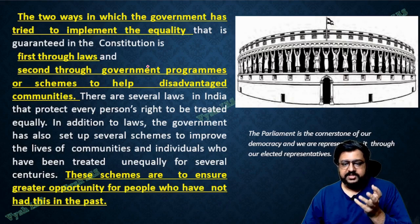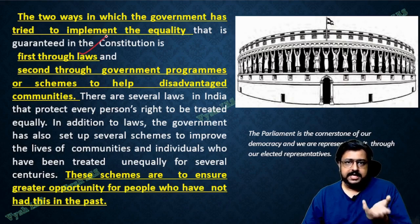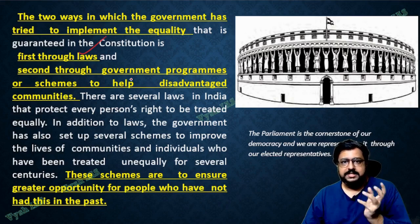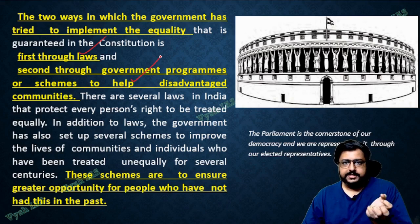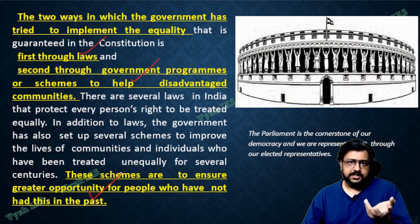The two ways in which government has tried to implement equality: one is through law — passing acts like disabled act and others in parliament. Then, government schemes. These schemes ensure people get good opportunities which they did not get in the past. Even now we are giving ration to pull people out of poverty — that is called schemes.